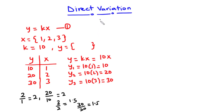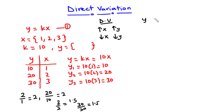We can conclude that for direct variation, an increase in the x values results in an increase in the y values, and a decrease in the x values results in a decrease in the y values. Given that y varies directly as x, or y is directly proportional to x, we can write this mathematically using the proportionality sign. We then replace this sign with an equality sign and introduce a constant, giving us y equals kx.